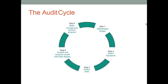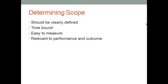This is the audit cycle. Starting with the first step: determine the scope, then select the standards, then collect the data, then present and interpret the results with peer review, and finally make certain changes and monitor the progress — to check whether whatever changes you have made are really improving the care of the patient. These are the 5 steps, which are very important. The scope should be clearly defined, time-bound, easy to measure, and relevant to performance and outcome.